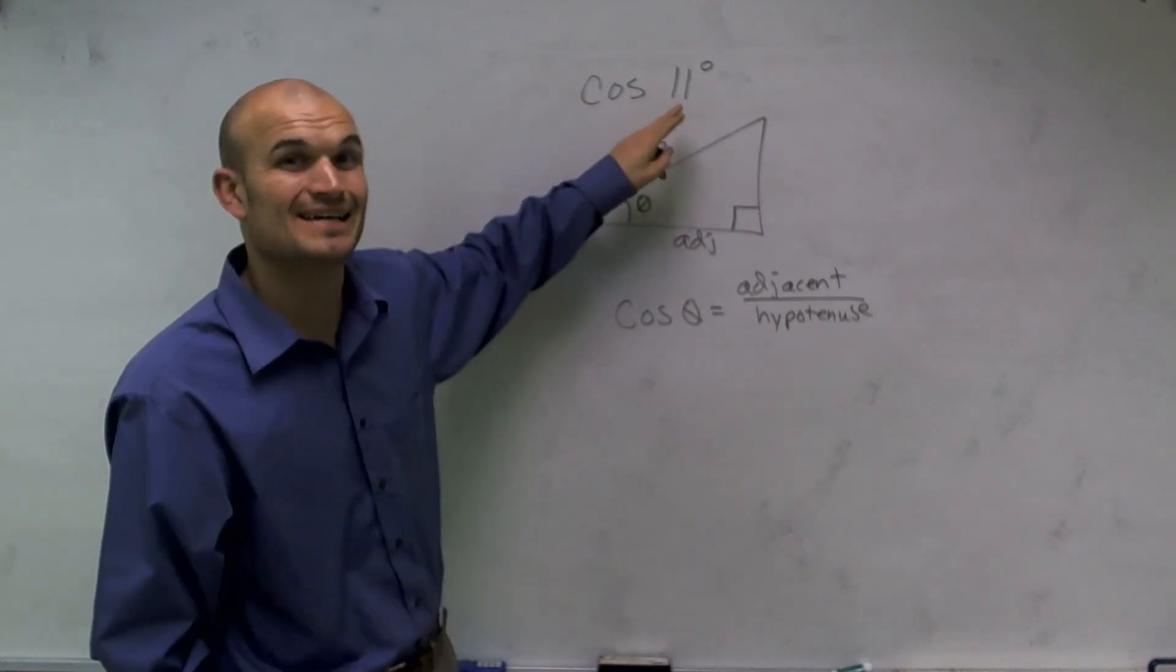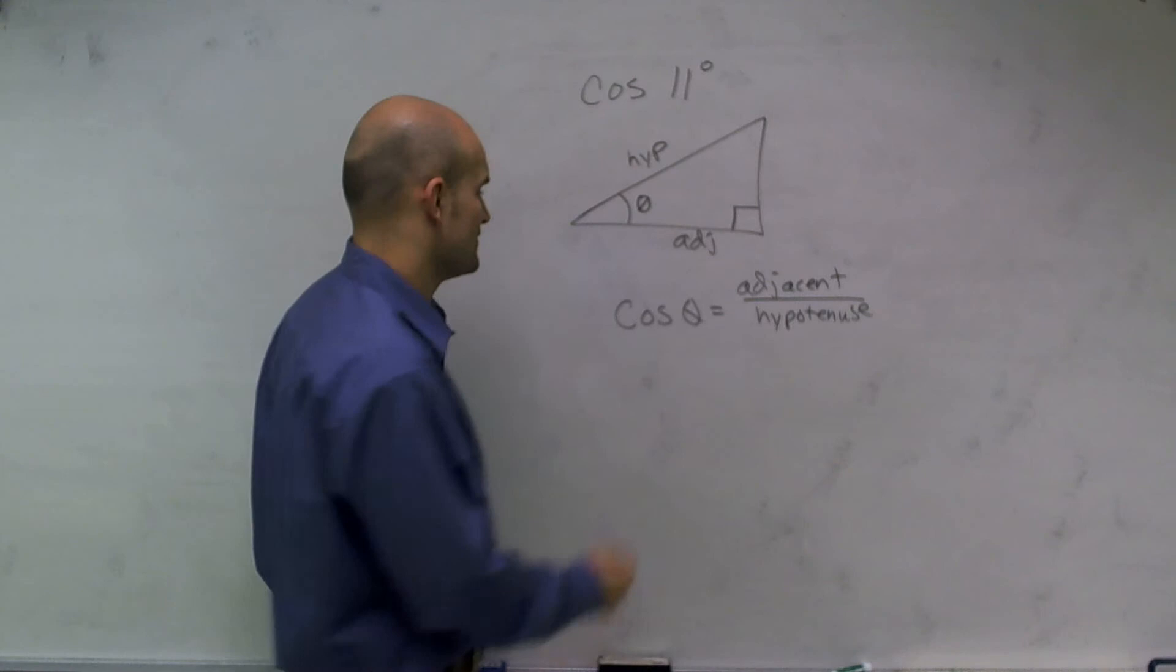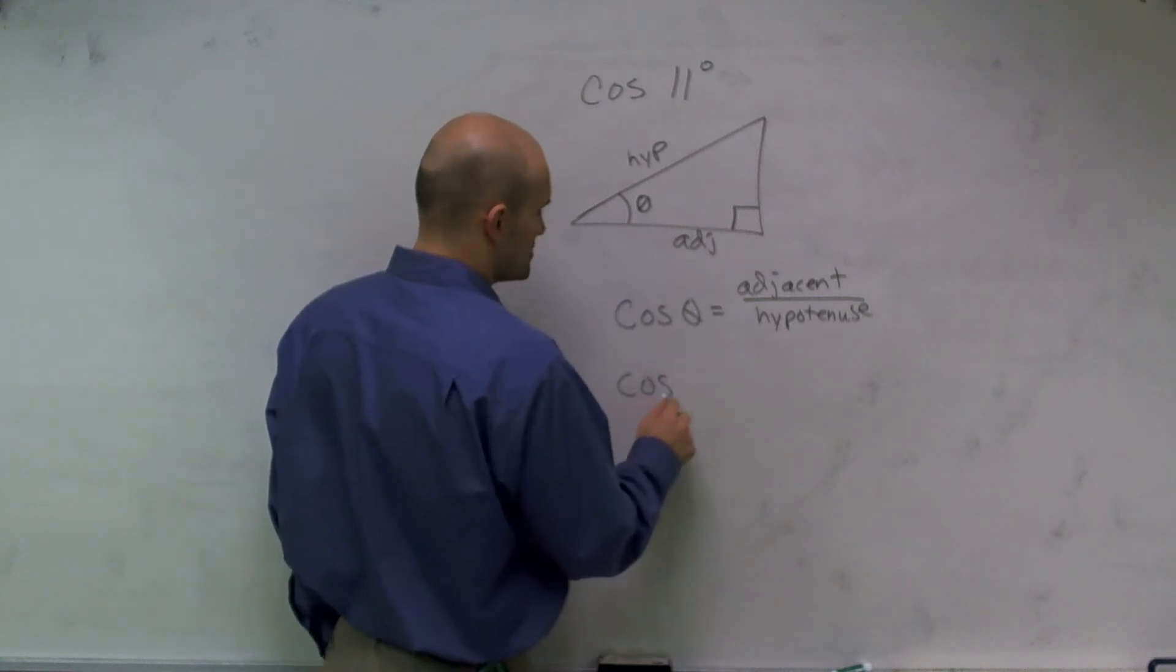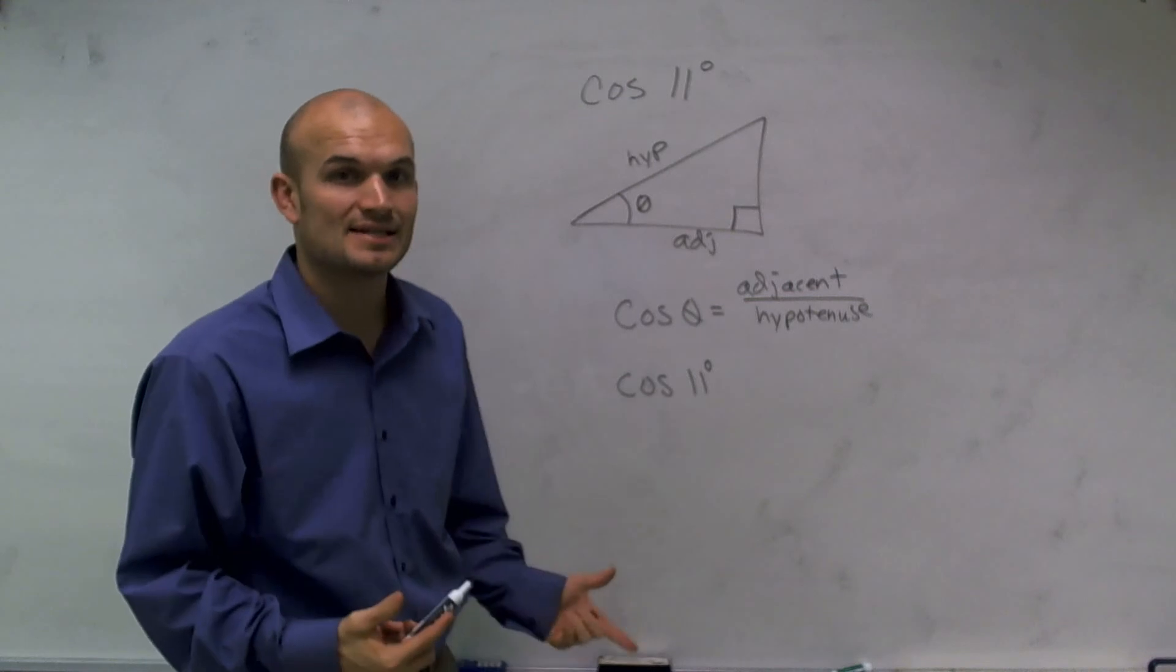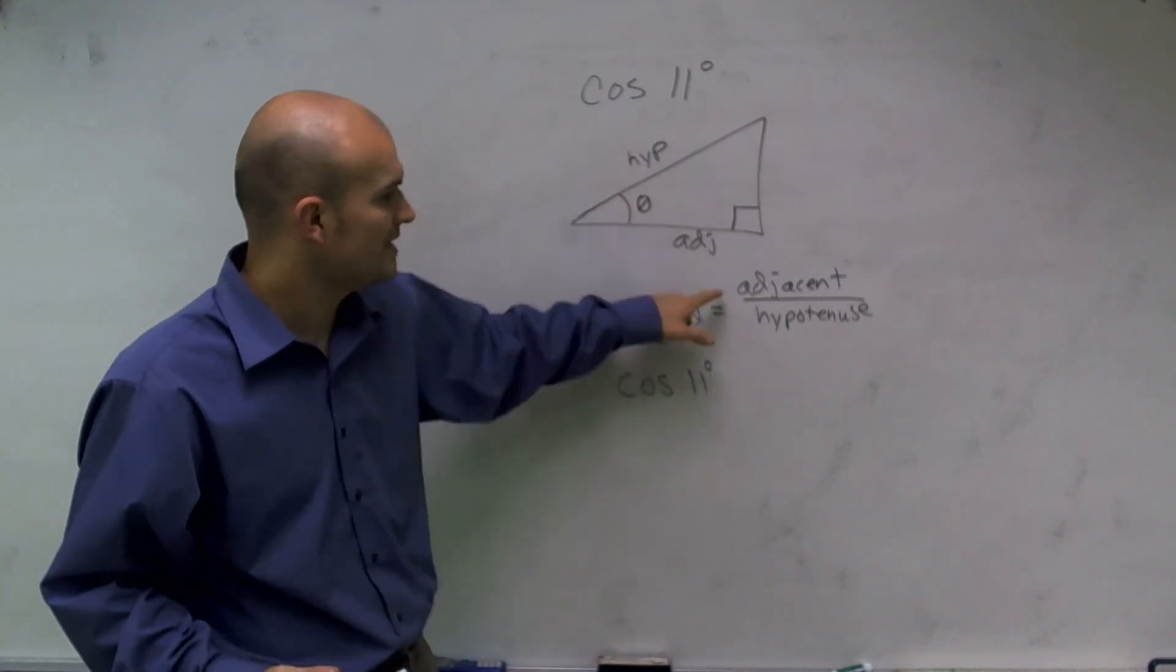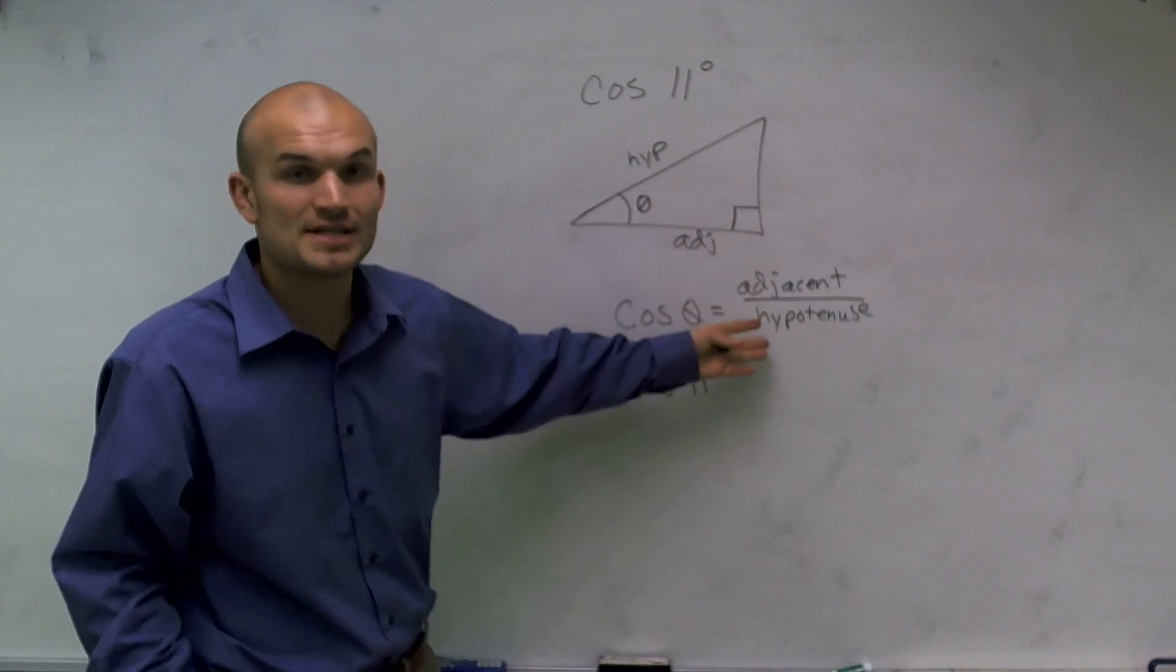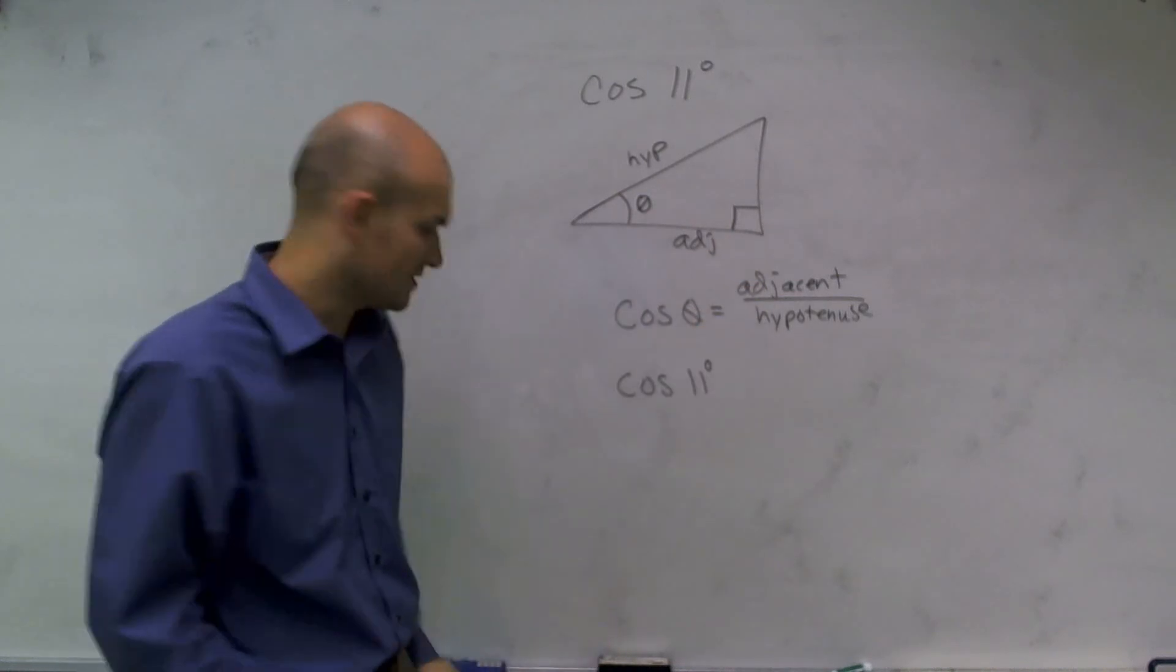What we're given is we are actually given already the angle 11 degrees. So cosine of theta, we actually know what theta is. Theta is our angle. So cosine of 11 is going to equal a ratio of adjacent over hypotenuse.